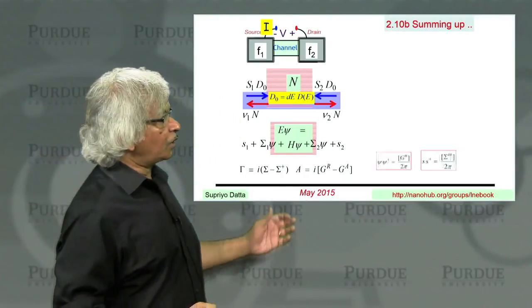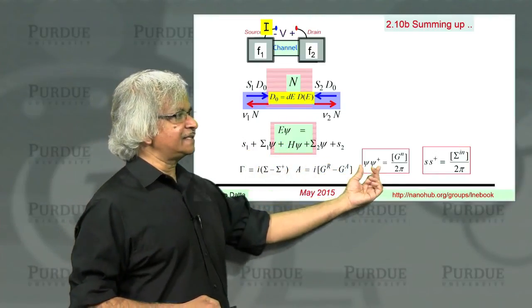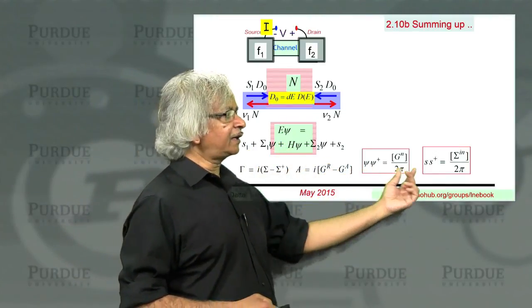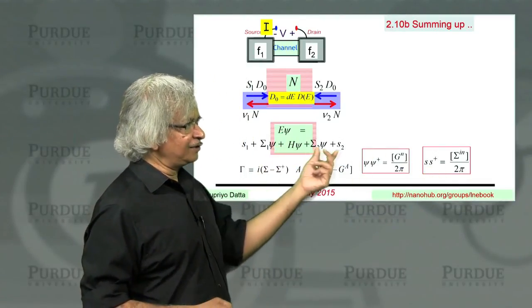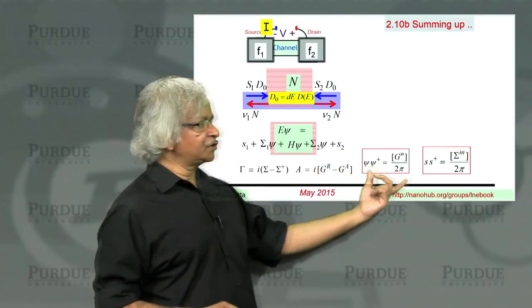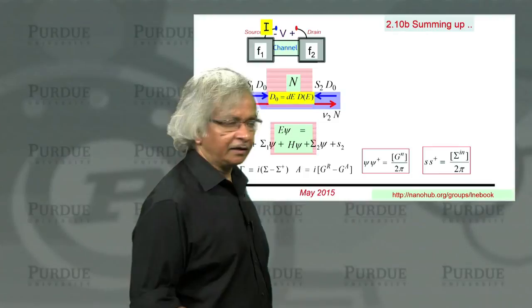What we need is equations that relate the psi psi dagger directly to the Ss dagger, rather than Schrodinger equation which relates psi to S. Once you have equations like this, then multiple sources can be added up.